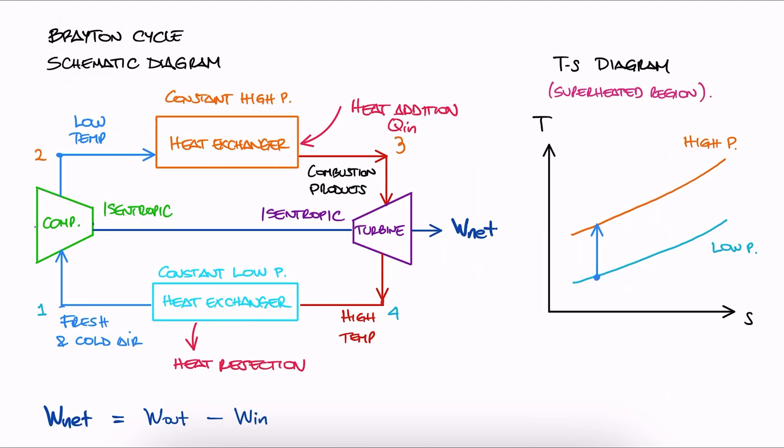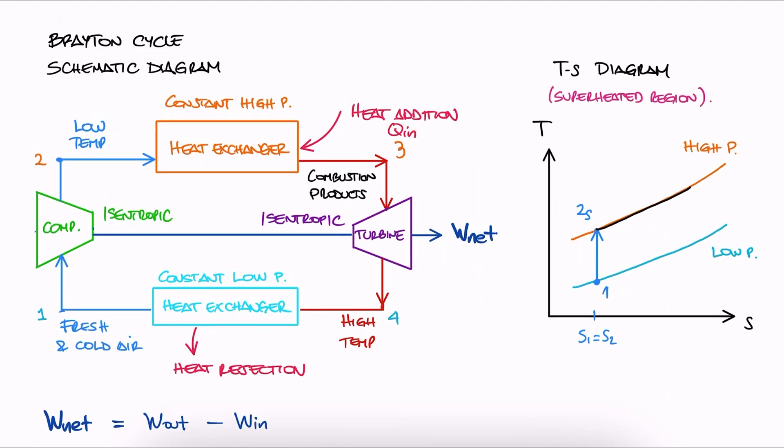Let's plot these here. From 1 to 2, we are going from low to high pressure isentropically, so 2 should really be 2 sub s. Because from 2 to 3 we are adding heat at constant pressure, the temperature rises.